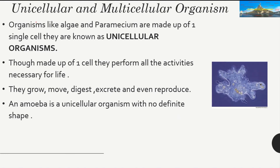Now let's look at the classification of organisms on the basis of number of cells. There are two such classifications: unicellular and multicellular. First, unicellular — organisms that are made of one cell. 'Uni' means one, so organisms made of one cell are known as unicellular organisms. Examples are algae and Paramecium.